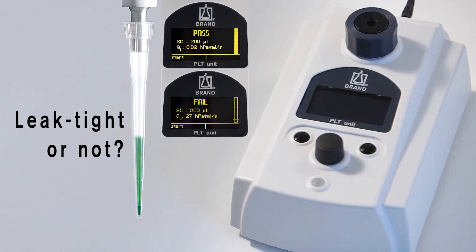The PLT unit from Brandt finds even the smallest leaks in just seconds and compares the missing volume with the tolerances in the ISO standard.